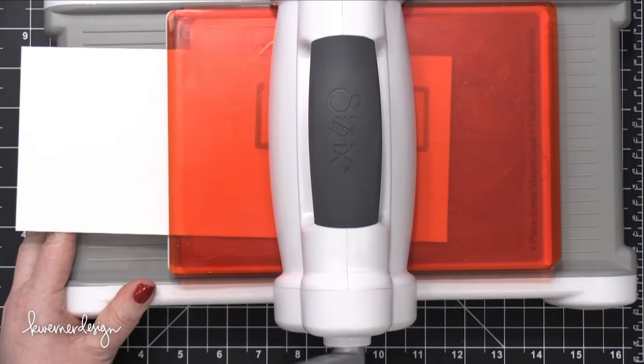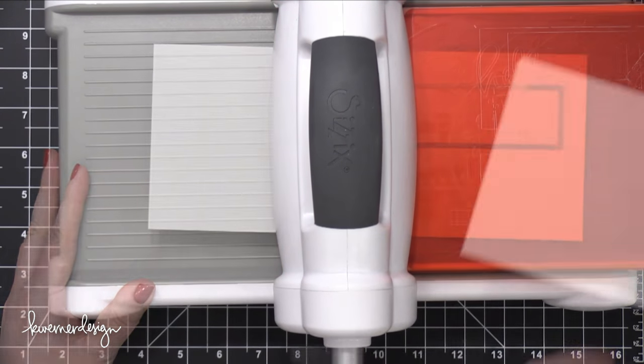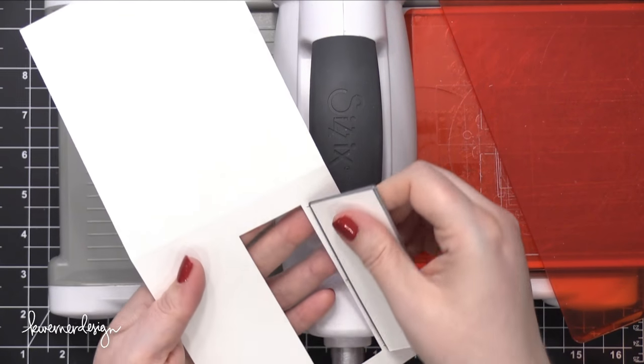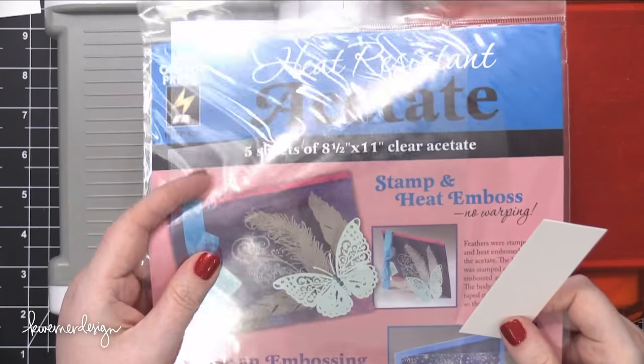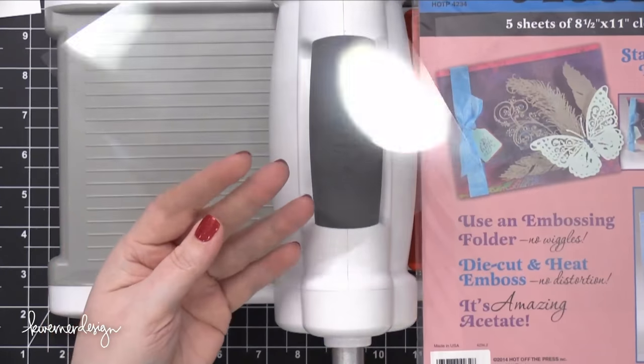You're going to place that on your pocket and run that through your die cutting machine to create the window. This is the window where all of our stamping is going to be and it also needs some acetate with it.